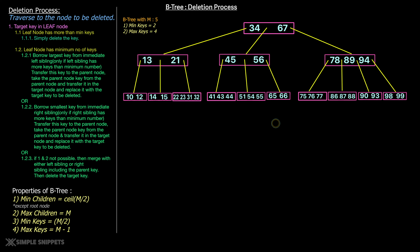Let's start off with the deletion process. We have an example B-tree with m equals to 5 — m is the order of the B-tree — which means it can have m children and m minus 1 keys. The maximum number of children equals to m, which is 5, and the minimum number of keys is floor of m divided by 2, which is floor of 2.5, giving us 2.